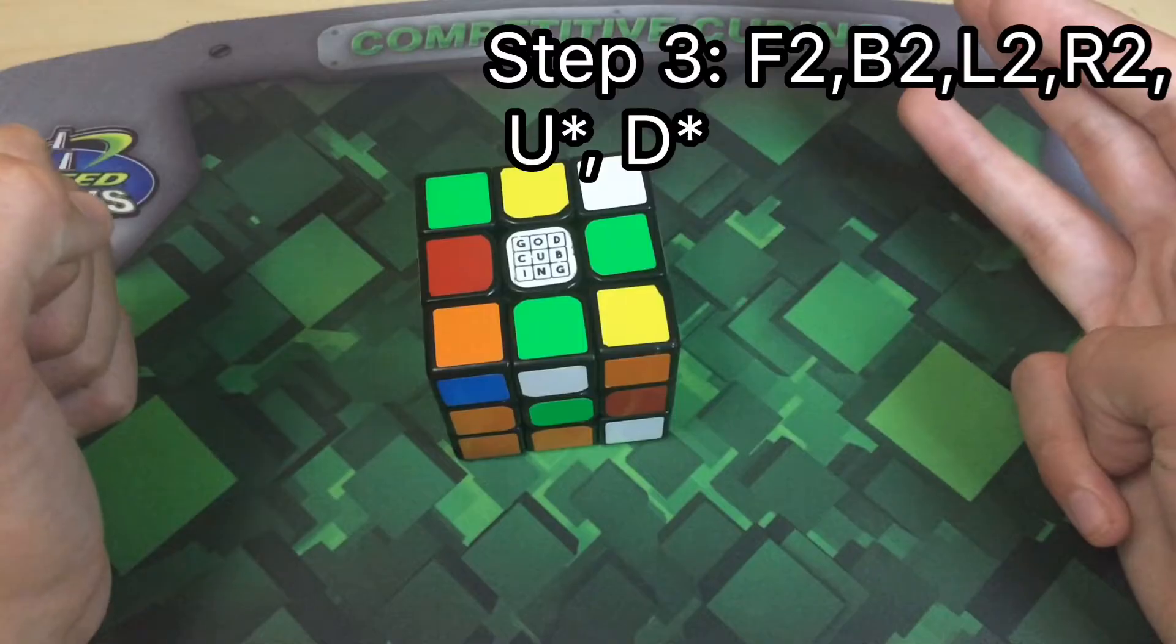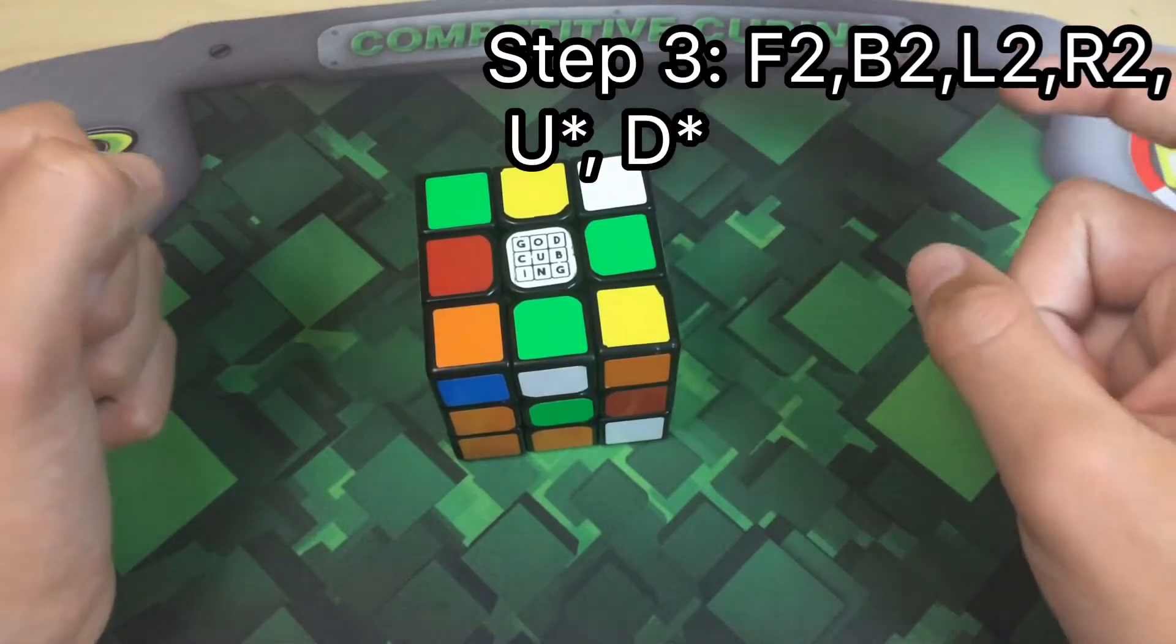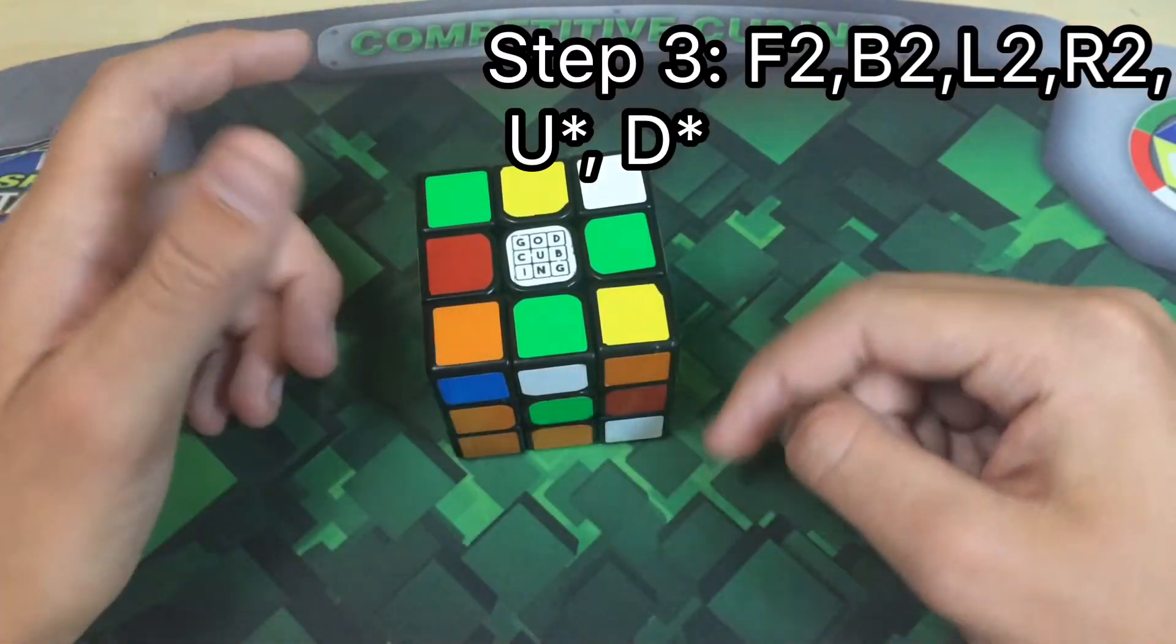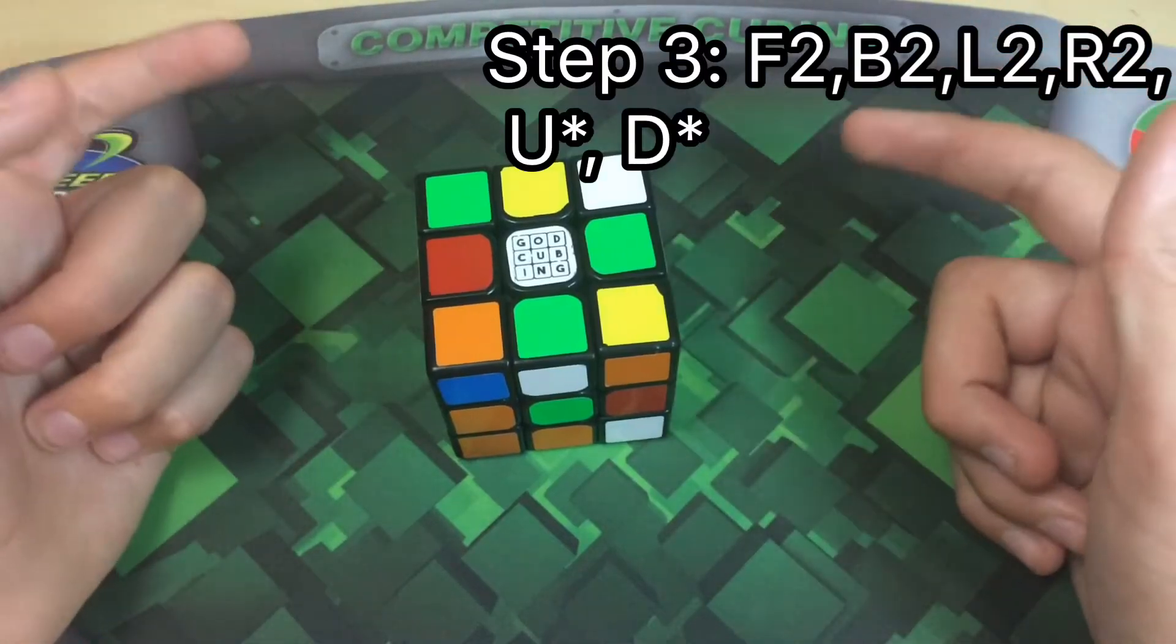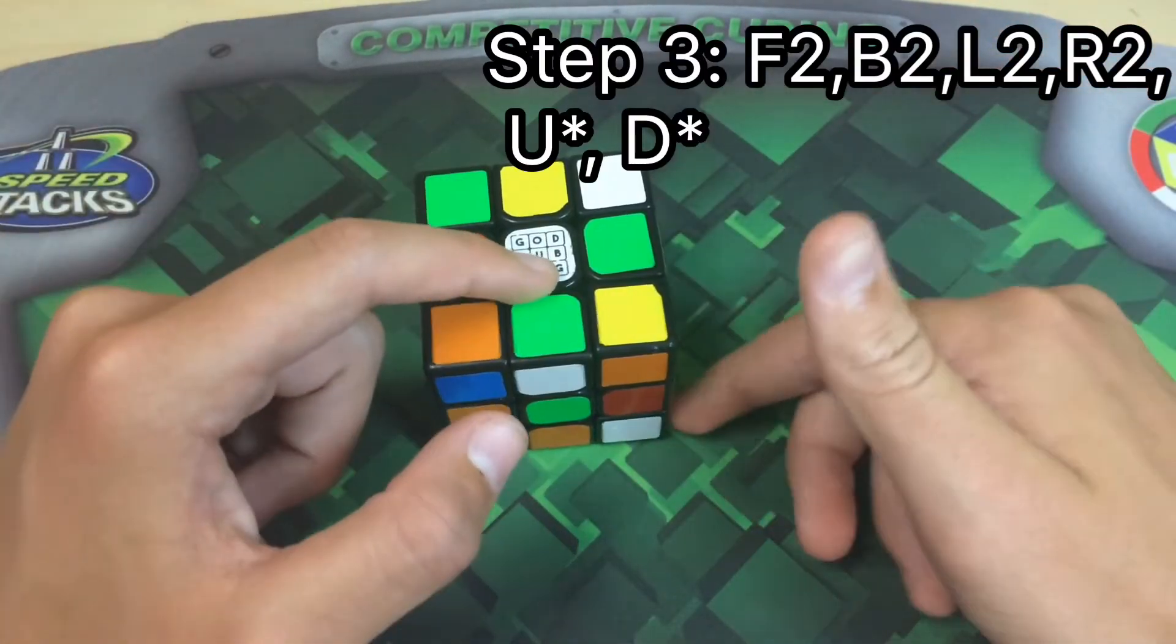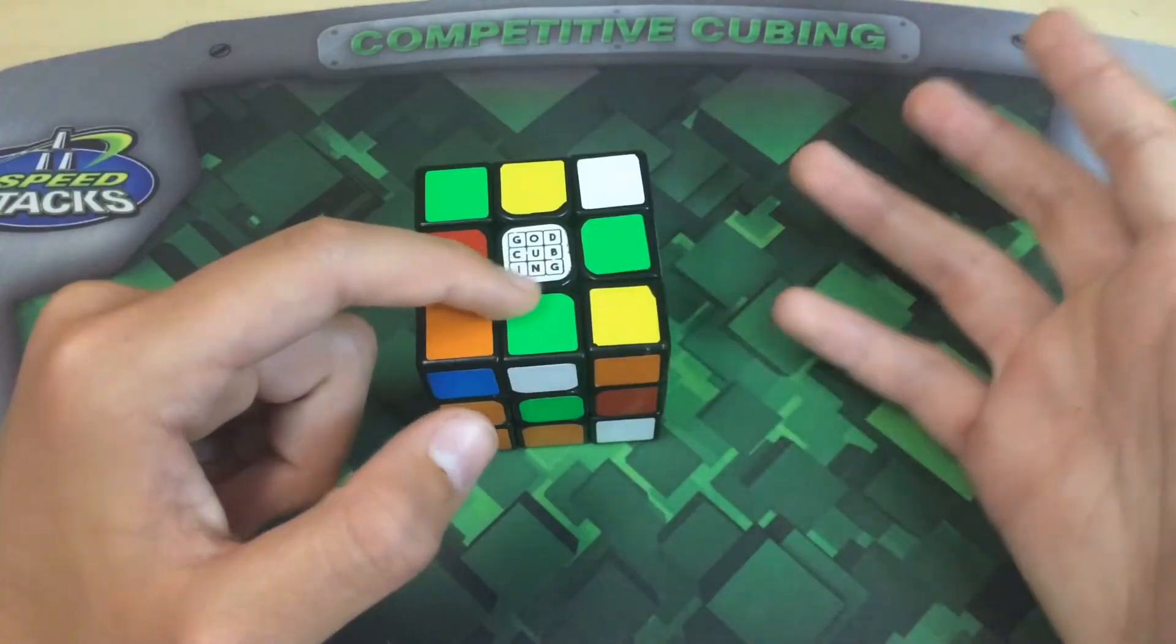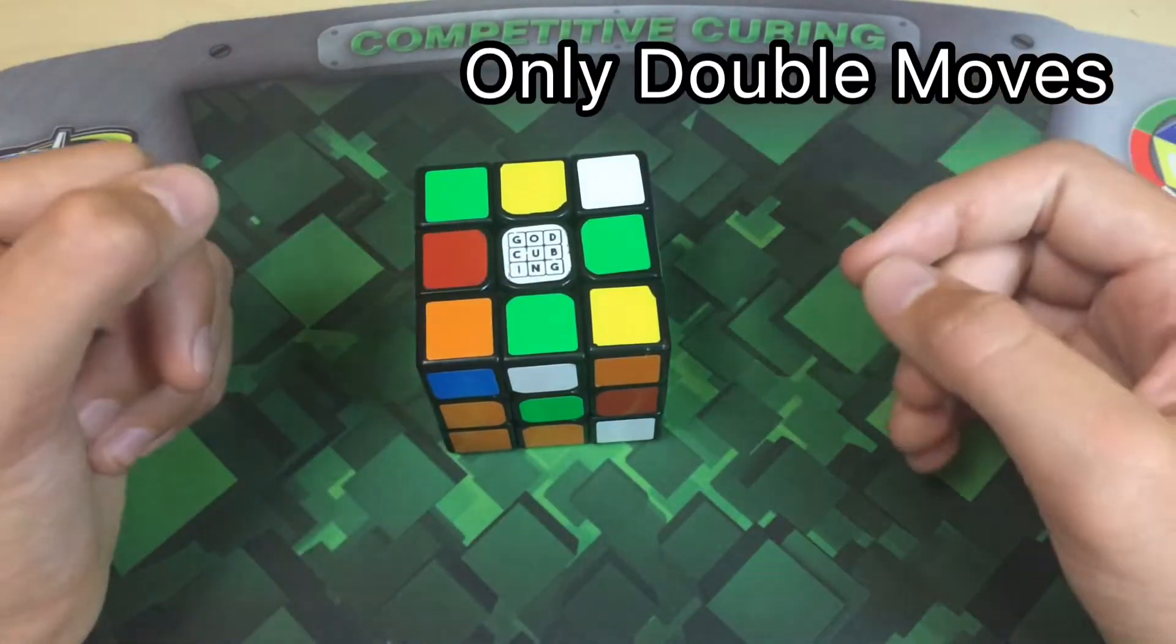And then in the third step, you can only use double moves on all of the front, back, left, and right sides. And you can use single moves or double moves on the top and bottom. And then during the last step, you can only use double moves.